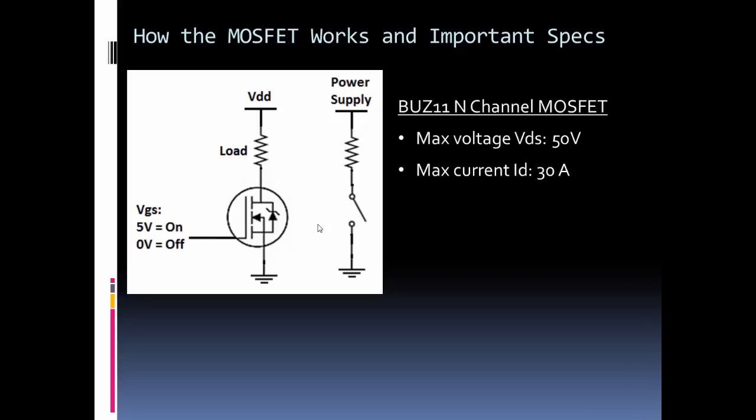If you were going to throw 30 amps through this MOSFET, you typically would have some type of large heat sink on it because that's a lot of current through a small device. I'll show a picture of it later in the example.